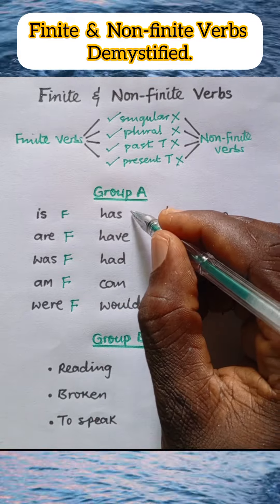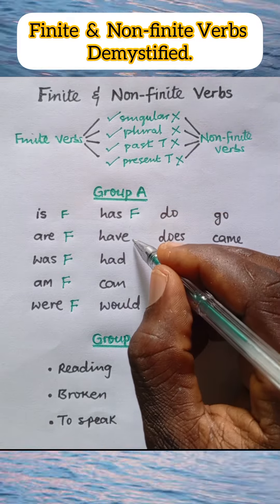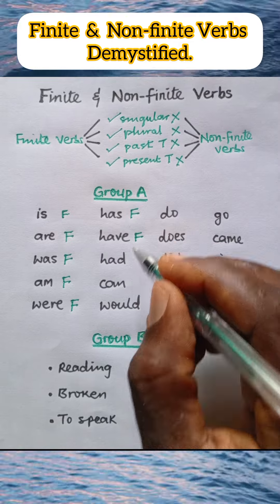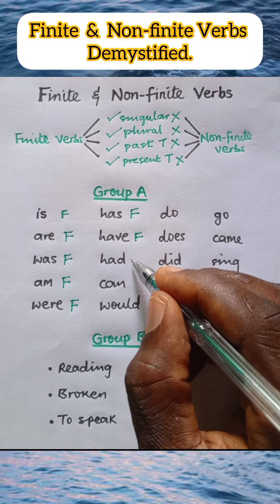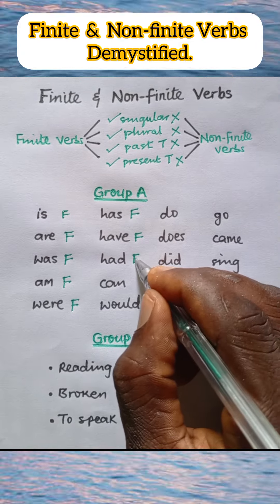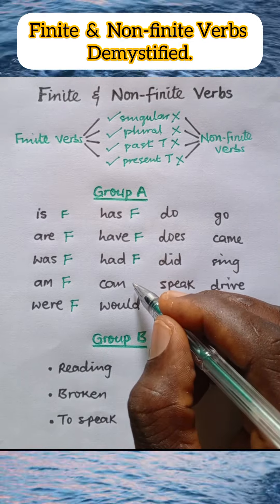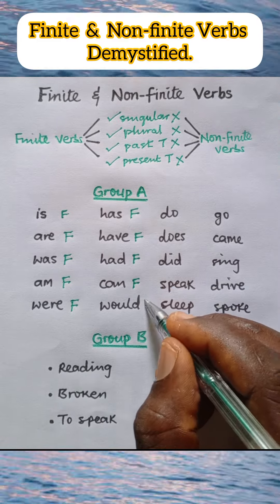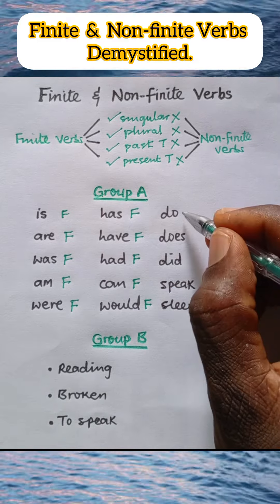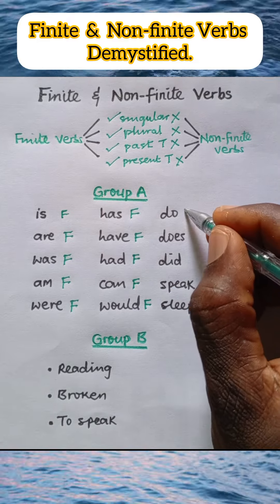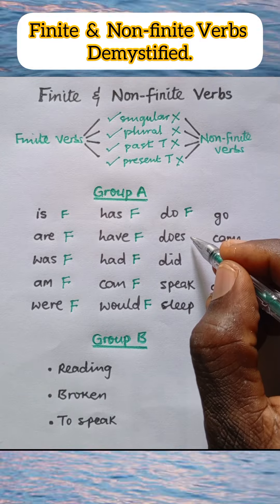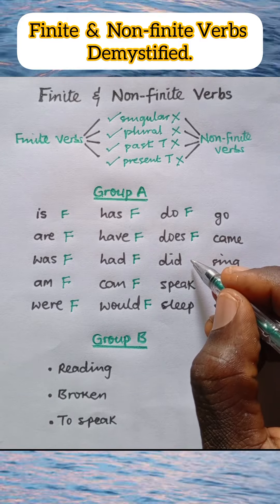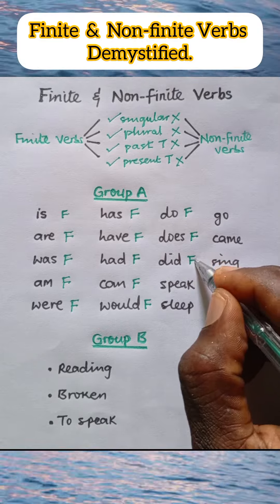Has is singular and present tense — it is finite. Have is plural and present — finite. Had is past tense — it's finite. Can is a present tense verb — it is finite. Would is past tense — it is finite. Do is plural and present tense — it is finite. Does is singular present tense — finite. Did is past tense — finite.